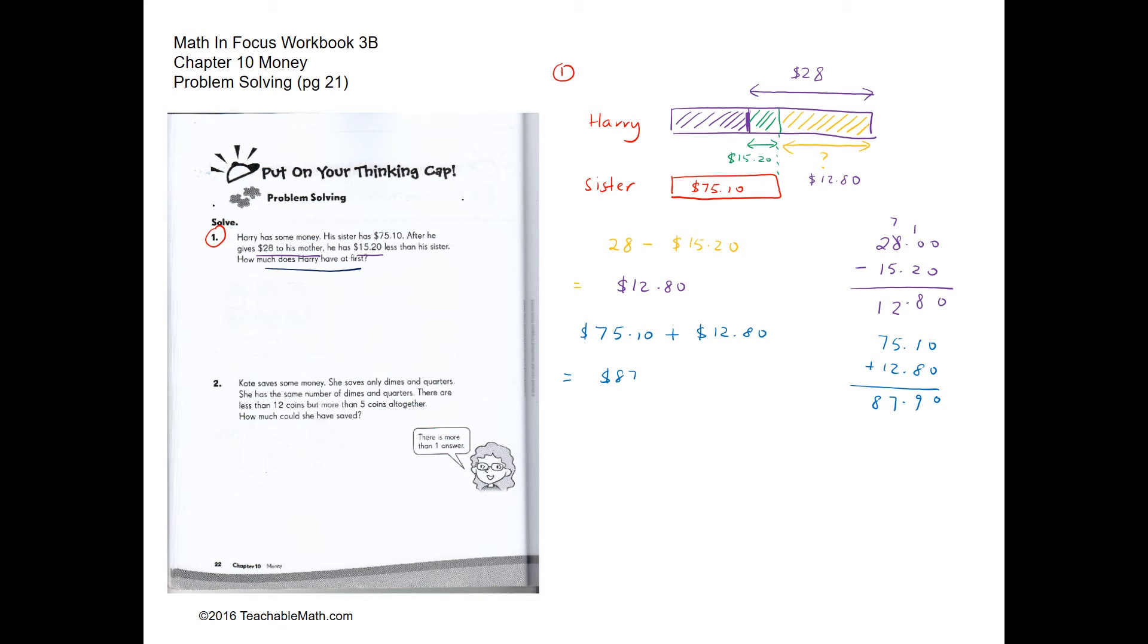And that will be $87.90. Next, for question two, we have dimes and we have quarters. So she has the same amount of dimes and quarters, but together it has to be more than five but less than 12. So we can maybe choose six. Maybe we can have three dimes and three quarters. So together she will have six coins. So what is, how much is three dimes and three quarters? There will be 30 cents plus 75 cents, and that will be $1.05.